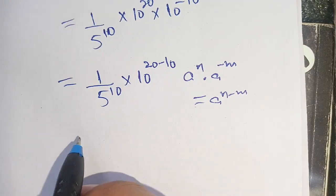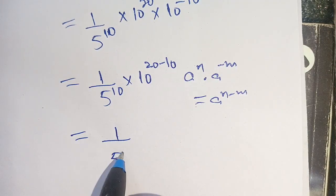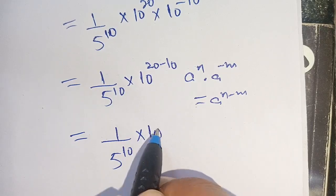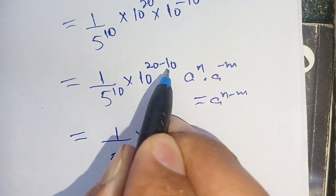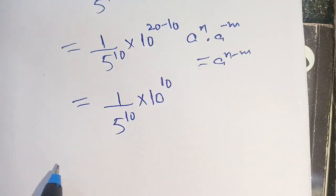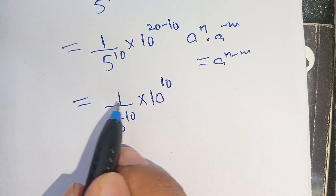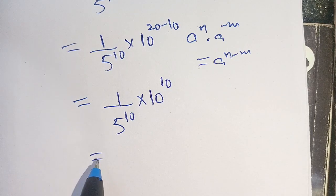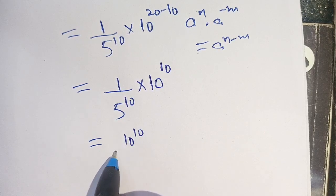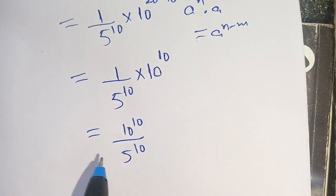It is equal to 1 divided by 5 raised to power 10, times 10 raised to power 20 minus 10, which becomes 10. Thus, it becomes 10 raised to power 10 divided by 5 raised to power 10.